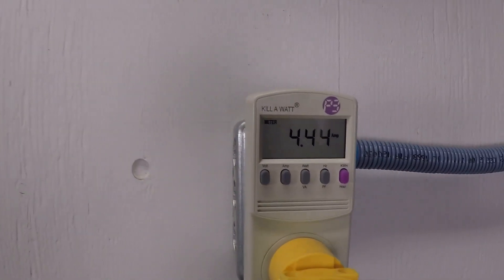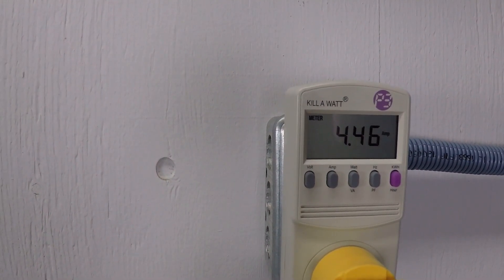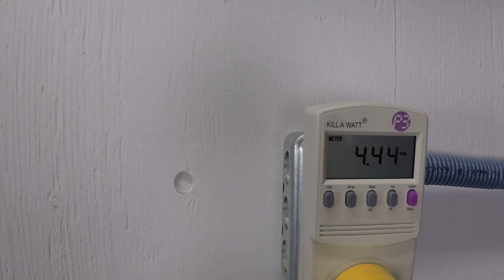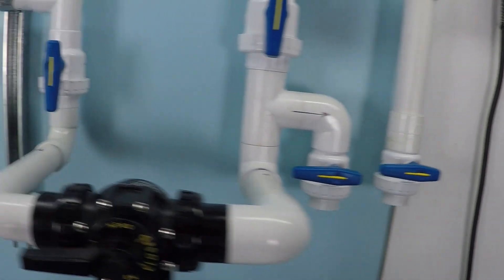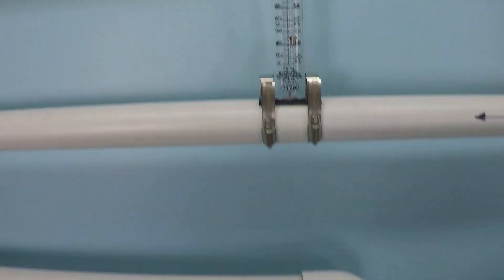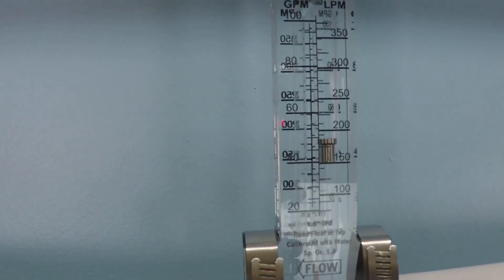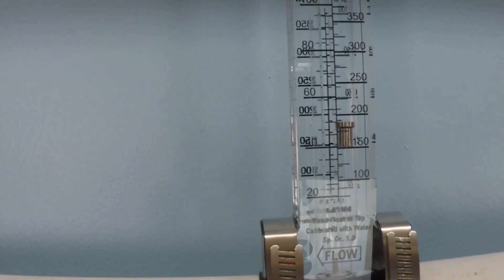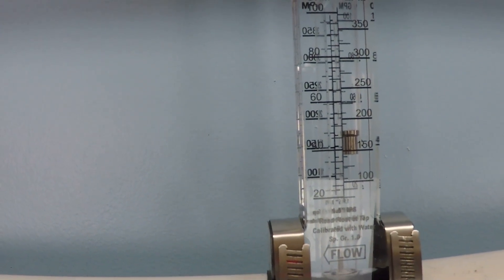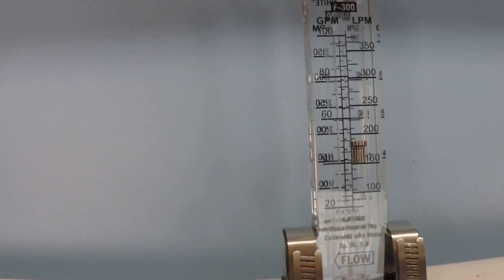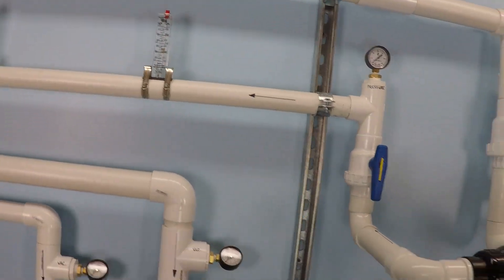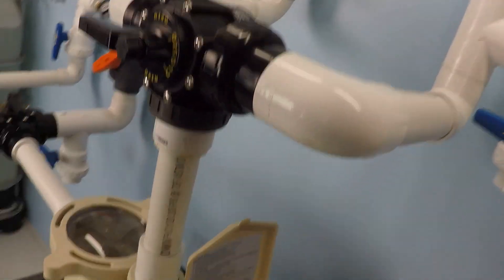2,000 RPM, 4.44 amps. I would call that about 48 gallons per minute.